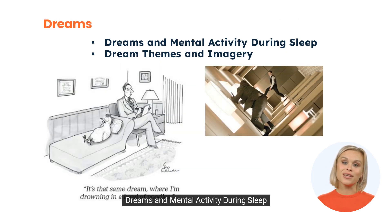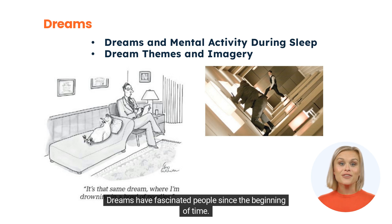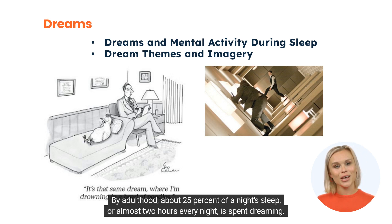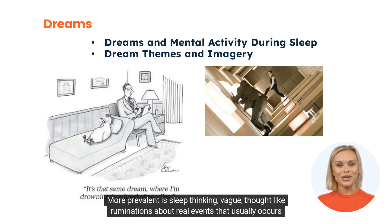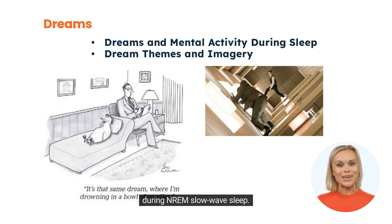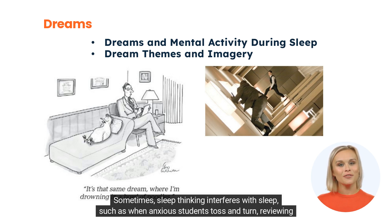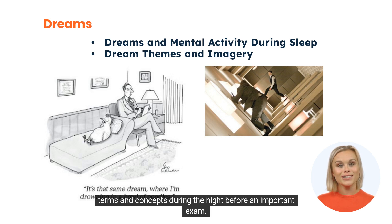Dreams and mental activity during sleep: Dreams have fascinated people since the beginning of time. By adulthood, about 25% of a night's sleep — or almost two hours every night — is spent dreaming. More prevalent is sleep thinking: vague, thought-like ruminations about real events that usually occur during NREM slow-wave sleep. Sometimes sleep thinking interferes with sleep, such as when anxious students toss and turn reviewing terms and concepts during the night before an important exam.